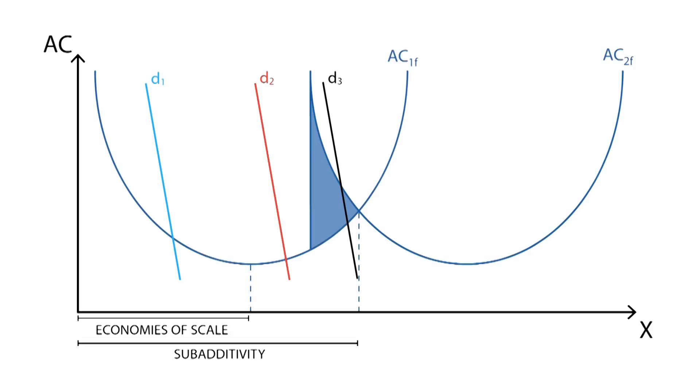If two firms were to share demand D3 and decided to put a price high enough, they both would be able to share profits equal to the black shaded area. However, any of these firms could decrease their selling price in order to banish the other firm from the market, since a single firm would still be able to produce at a lower average cost.